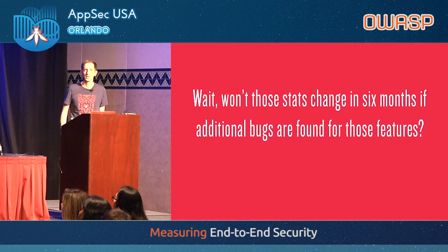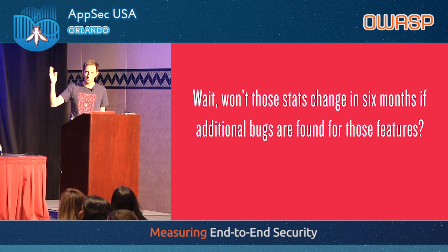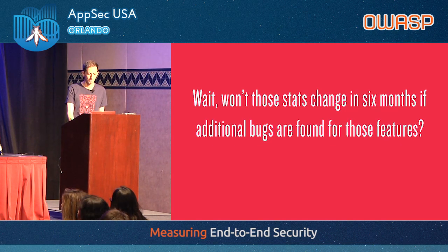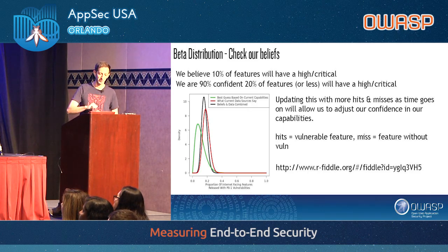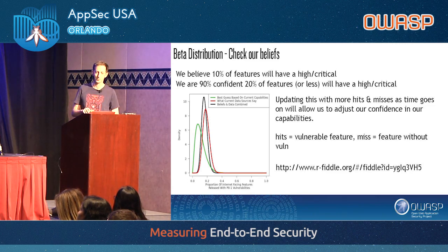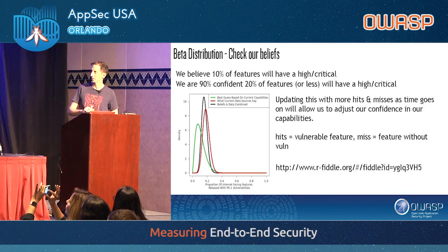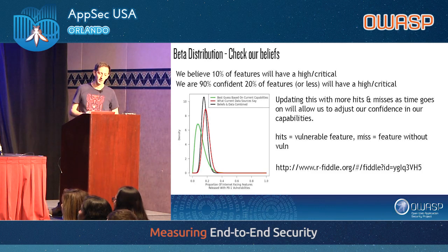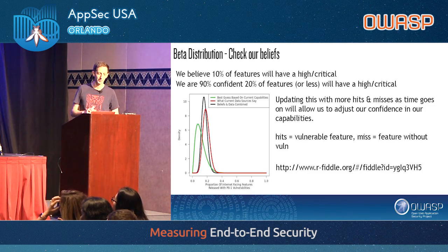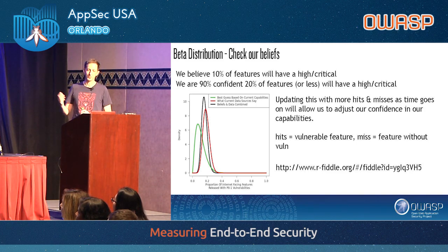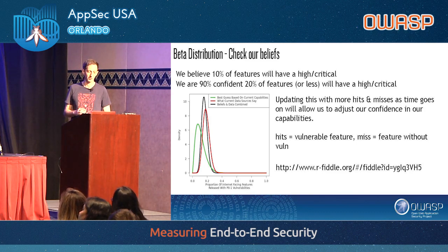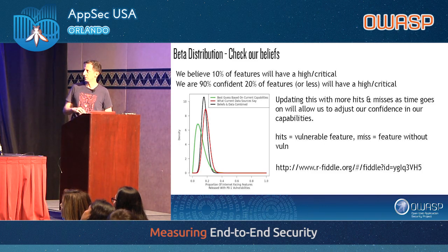One thing that comes up: won't those stats continuously change? The more bugs I find, that four-month period may change because there'll be bugs born in that period we didn't know about. Yes — so for that we use a beta distribution. This is based on code written by our CISO Richard Syerson, which you can find online and modify yourself. We continuously update it with information to compare our beliefs — like 10% of features will ship with a high/critical at some point in their lifetime — and say we're 90% confident 20% of features or less will have a high/critical. Beta distributions are based on hits and misses: for hits we use vulnerable features, for misses we use features without a vulnerability.